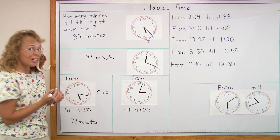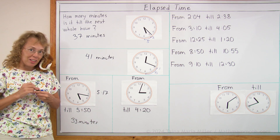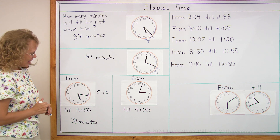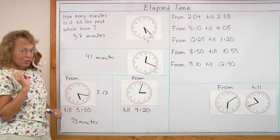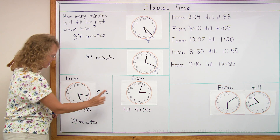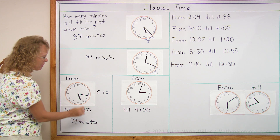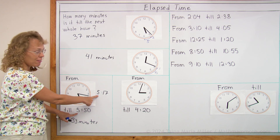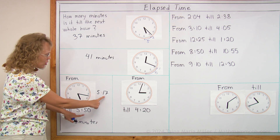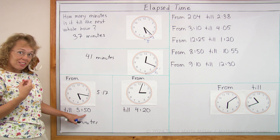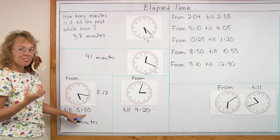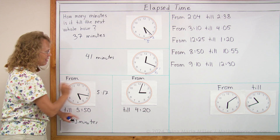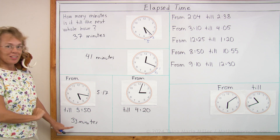Can you think of another way of solving the same problem? If you were only given the numbers 5.17 and 5.50, you notice that there is the same hour — five hours. So you look at the minutes and find the difference of 17 and 50. You can subtract 50 minus 17, which gives 33.